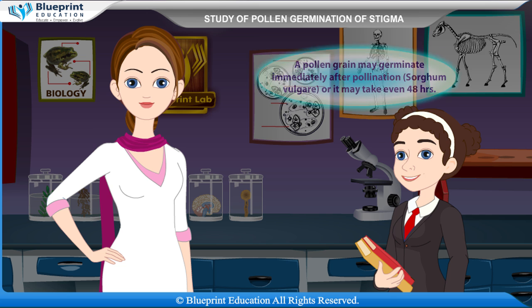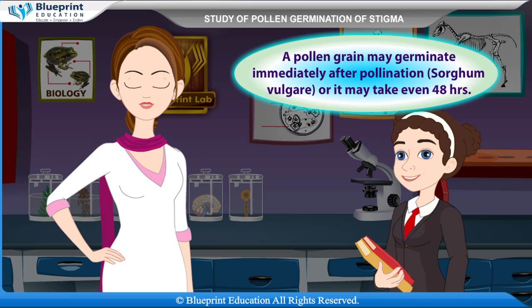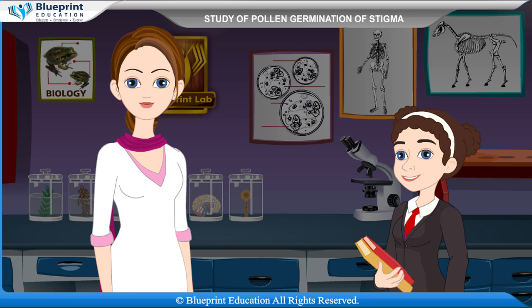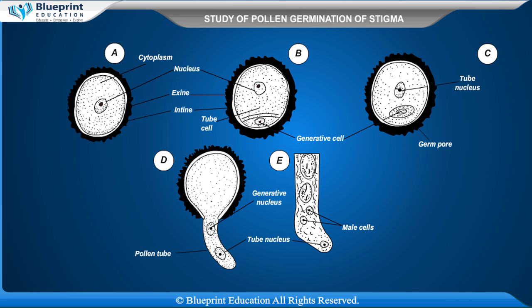How are pollen grains germinated? A pollen grain may germinate immediately after pollination, as in Sorghum vulgare, or it may take even 48 hours. Not all pollen grains germinate. The percentage of pollen grain germination and tube growth depends upon external and internal factors. External factors are temperature, humidity, and light, whereas internal factors refer to carbohydrates, boron, calcium, enzymes, and hormones. High levels of boron in the stigma are known to occur in many plants of Cruciferae, Leguminosae, Solanaceae, Cucurbitaceae, etc.